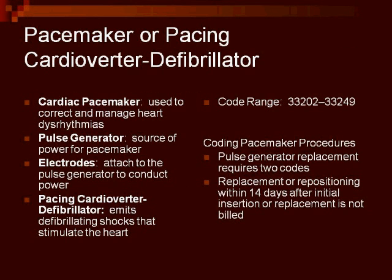A cardiac pacemaker is used to correct and manage cardiac dysrhythmias. It shocks the heart into a regular rhythm. There are different parts to a pacemaker: the pulse generator, which is the source of power or the battery, and electrodes or leads that attach to the generator to conduct power. A pulse generator will need to occasionally be replaced, like batteries in a watch. Replacing the pulse generator will require two codes: the removal of the pulse generator and the insertion of a new one.